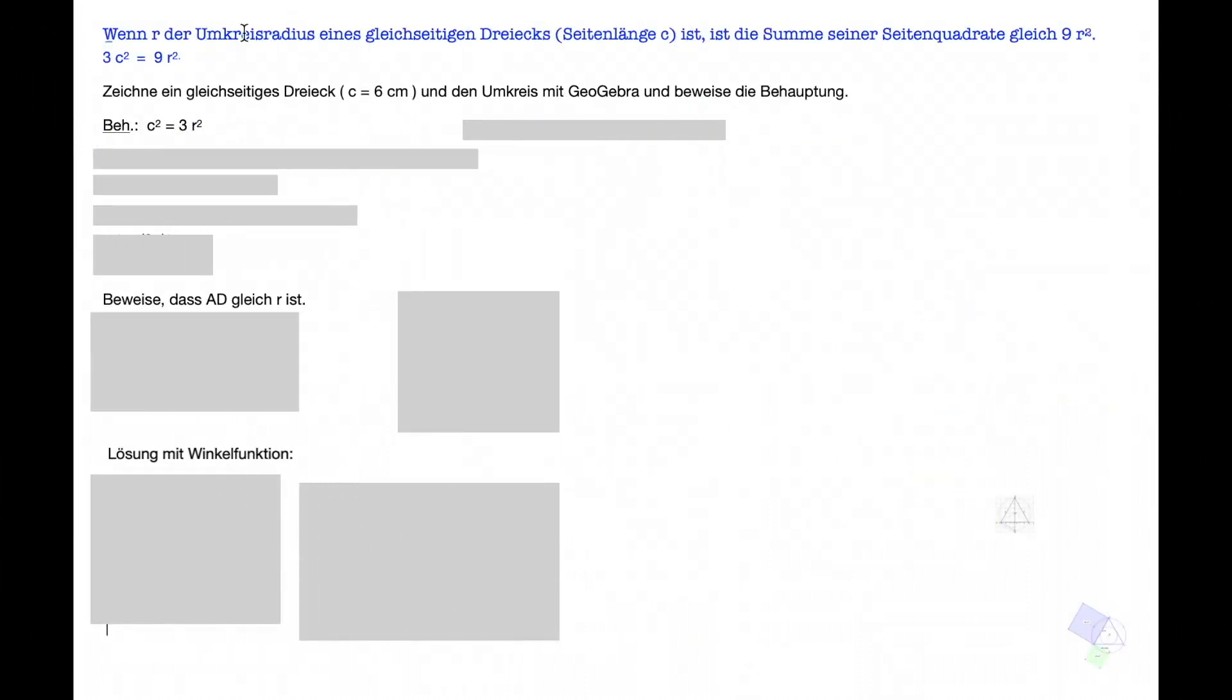Es geht nun darum, diesen Satz hier zu beweisen. Wenn R der Umkreisradius eines gleichseitigen Dreiecks mit der Seitenlänge C ist, ist die Summe seiner Seitenquadrate gleich 9R². Also behauptet wird, dass 3c² gleich 9R² ist.